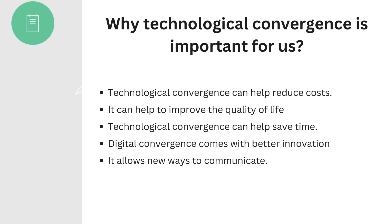It also helps to improve the quality of life by making it easy to maintain fewer devices. Technological convergence can help save time because you don't have to go to several devices to get the work done — you use a single device. You will also have less wires, use less electricity, and have lower power consumption, since there won't be as many devices. Digital convergence also brings better innovation, so we get faster improvements with better features. High-resolution cameras in today's smartphones give better photo quality than the digital cameras available a few years back.